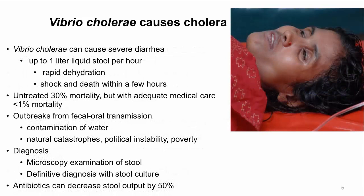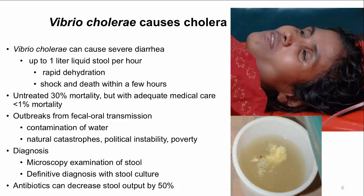Clinically, Vibrio cholerae can cause very severe watery diarrhea — up to one liter of liquid stool per hour can be lost. Here's a picture of a woman in Bangladesh who is very dehydrated from cholera. You can see her sunken eyes and ill appearance. She hasn't urinated since the beginning of her infection and has had 10 hours of diarrhea and vomiting. Untreated cholera has a mortality of 30%, but it can be reduced to 1% with rehydration. To rehydrate appropriately, you need to measure how much stool is lost. The watery stools are collected in a bucket to measure the amount. A typical description is that they look like rice water and have a fishy odor.